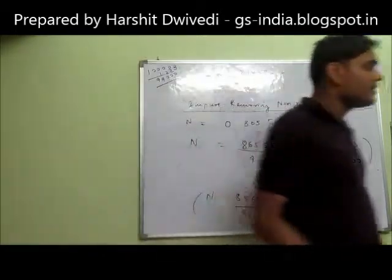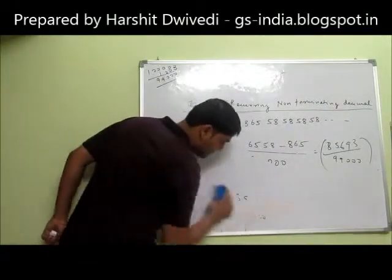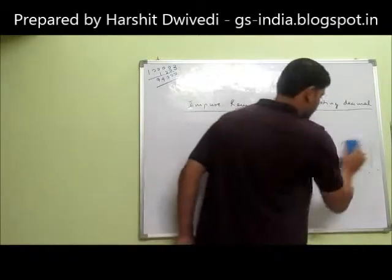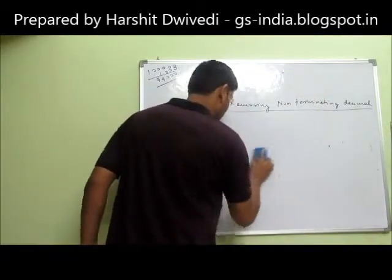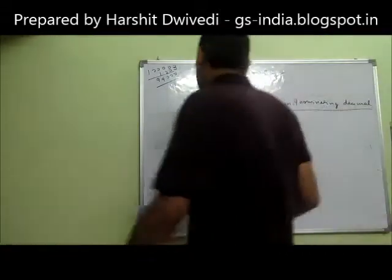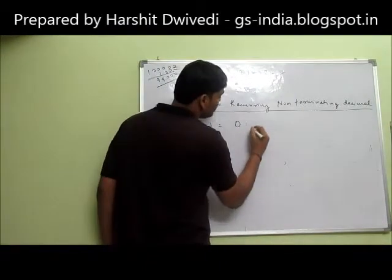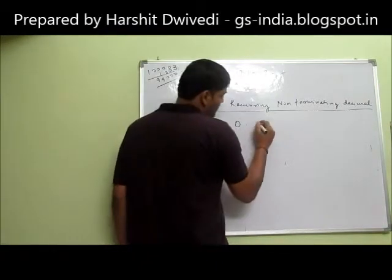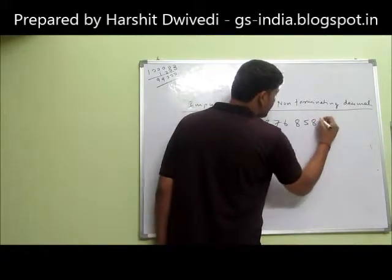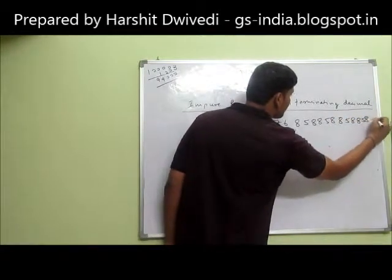I will take one more example — a difficult one. Suppose I have a number n equals 0.5876853858585858... so on. You want to rationalize this number.